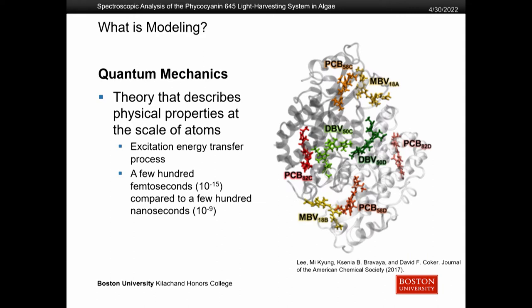The next step is quantum mechanics. Quantum mechanics is a theory that describes the physical properties at the scale of atoms. We wanted to calculate different properties to look at the excitation energy transfer process. Here we have the PC645 system — it exists in nature and is exposed to light. Light can come in and interact with the system, and if that light is at the right energy — what we call the excitation energy — it can go in and excite a chromophore. This chromophore can then relax and excite another chromophore, so you can see that energy moves through the system. As it does, it dissipates some of this energy and down converts it to a lower form of energy.